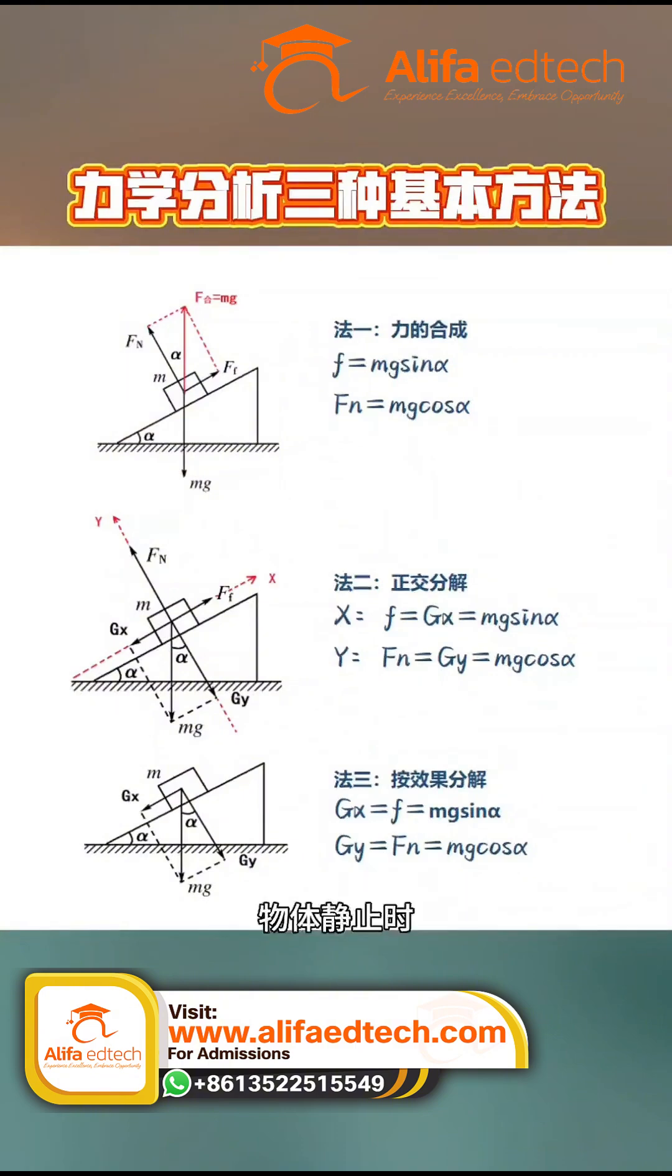When the object is at rest, the friction force balances the component down the incline and the support force balances the component perpendicular to the incline. By direct correspondence, we can find the result.